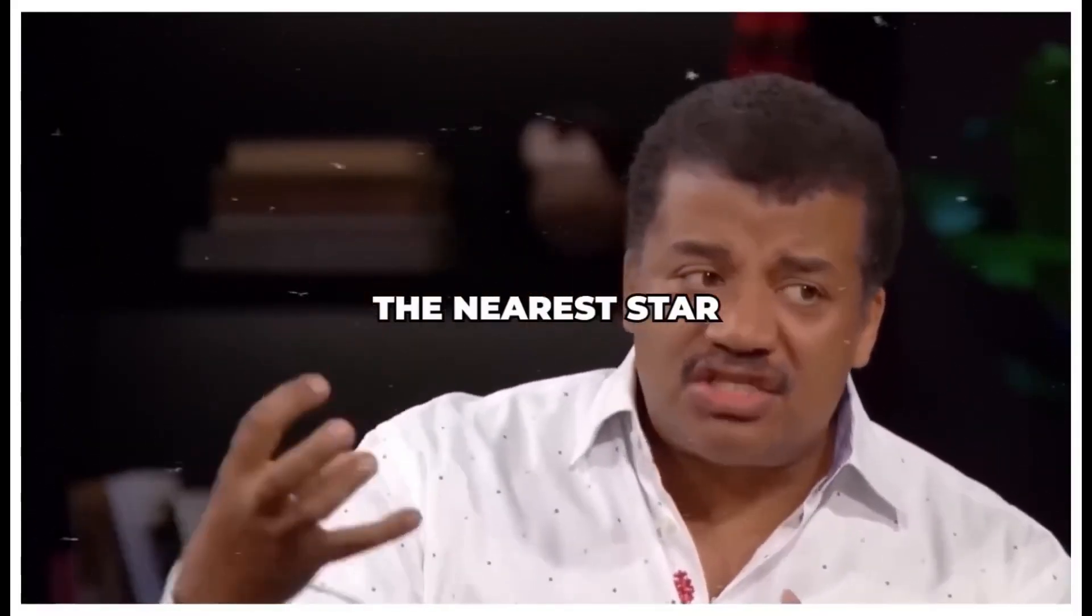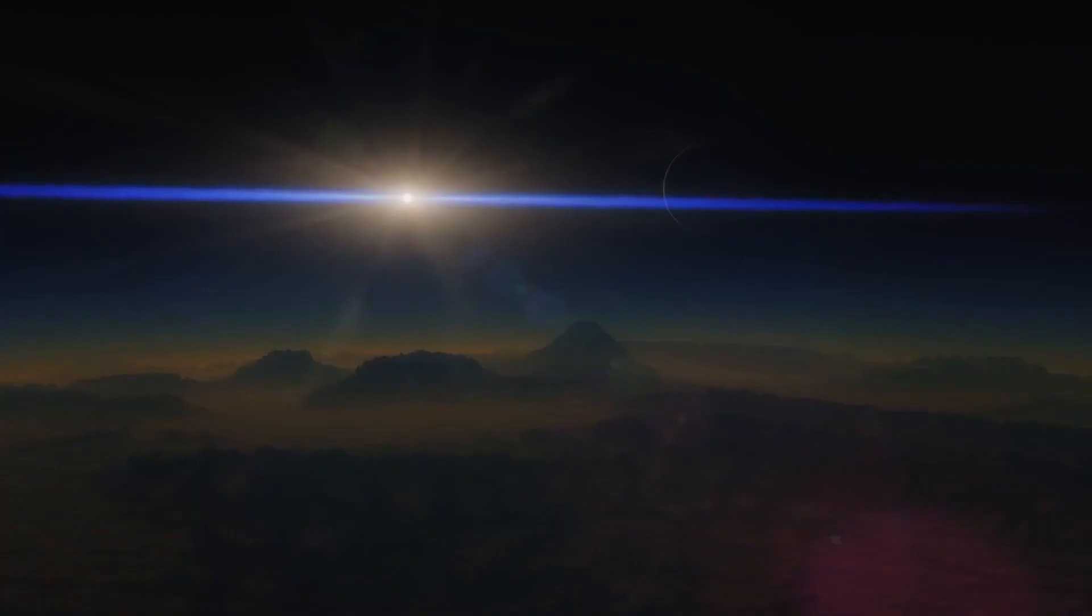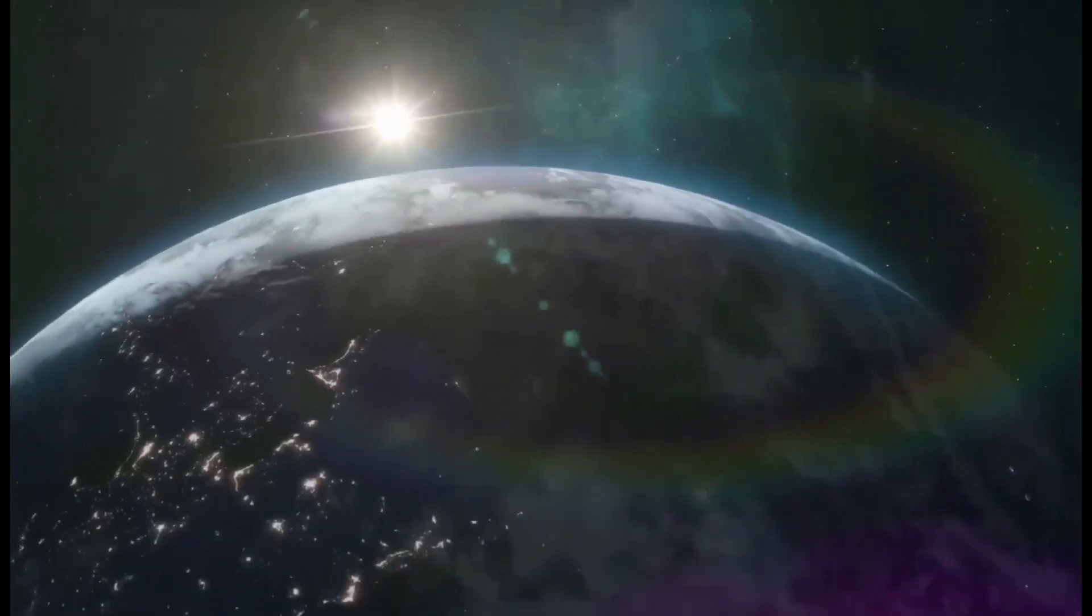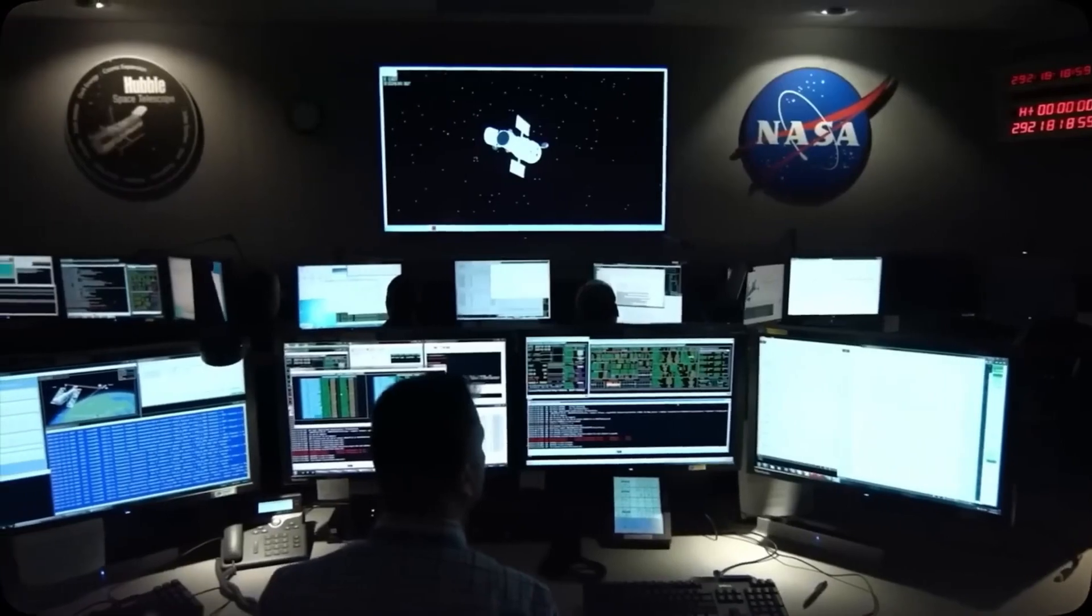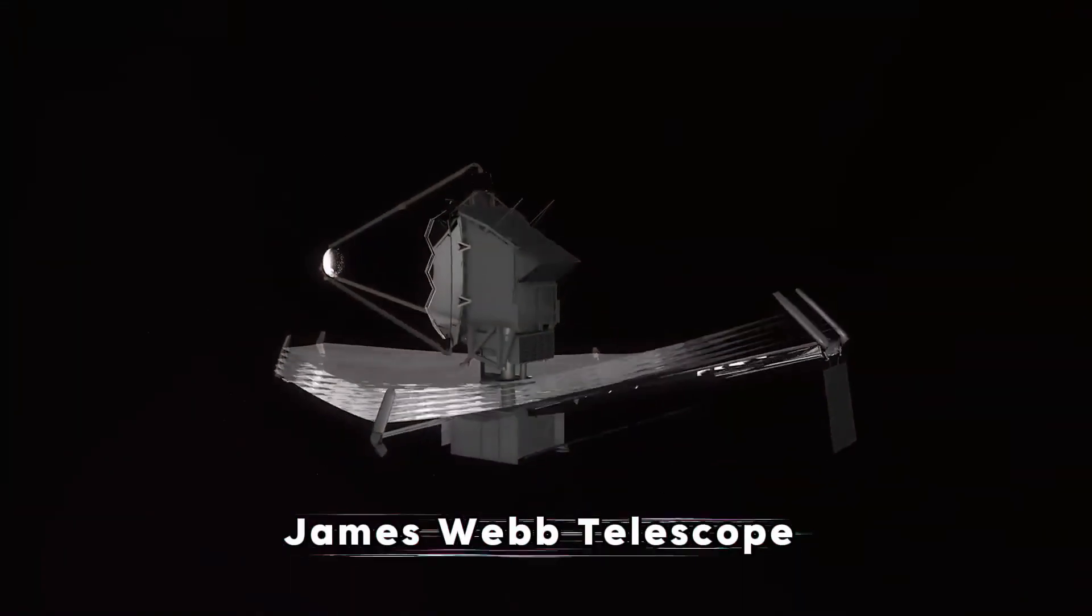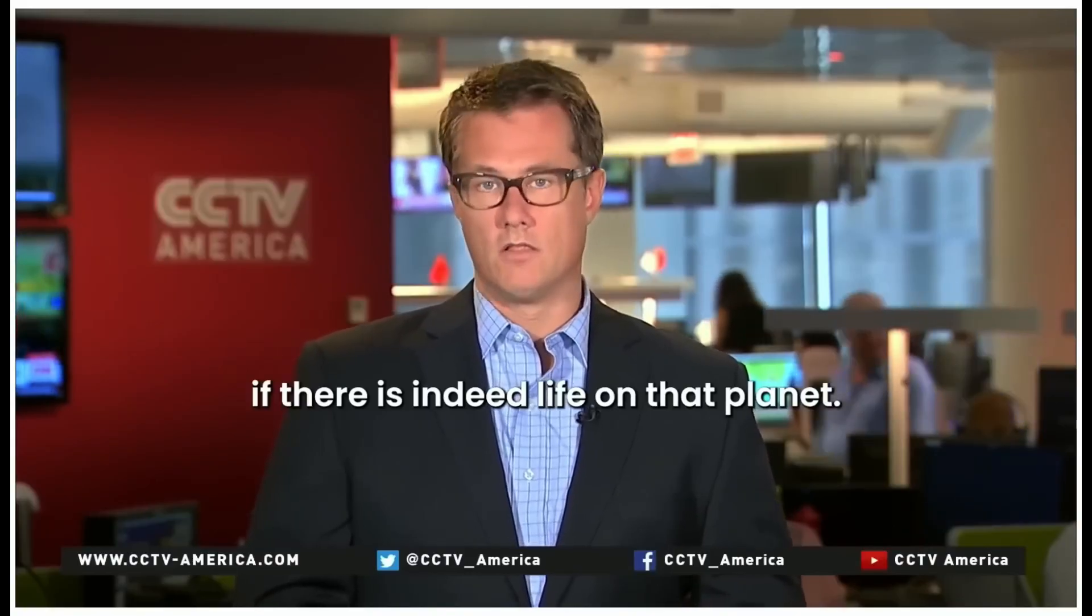Located near Proxima Centauri, part of a unique trio of stars, Proxima B's close proximity to its star might indicate liquid water could exist in its habitable zone. Unlike our sun, Proxima is cooler, allowing its habitable zone to be closer, a prime setting for potential life.